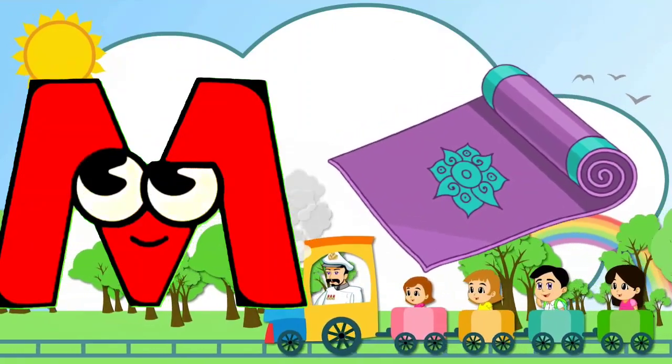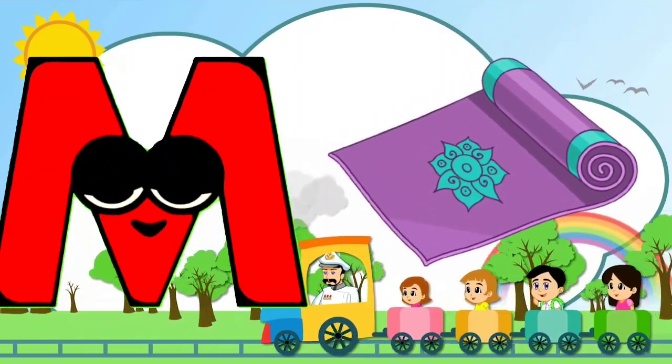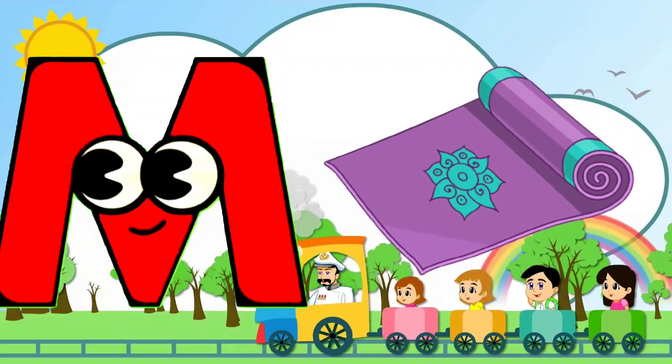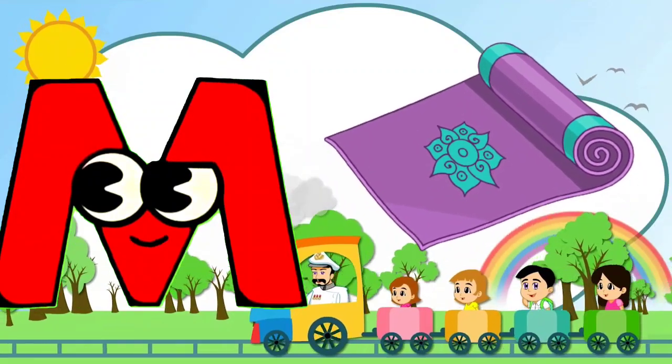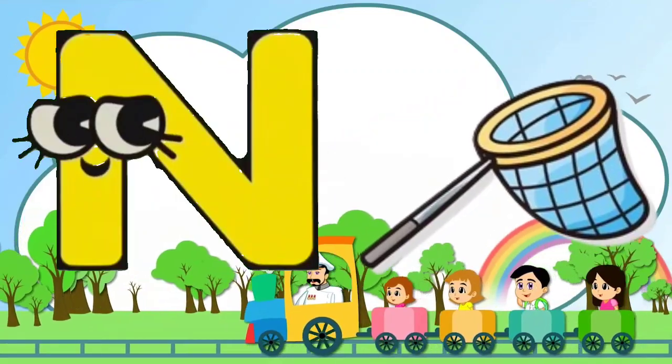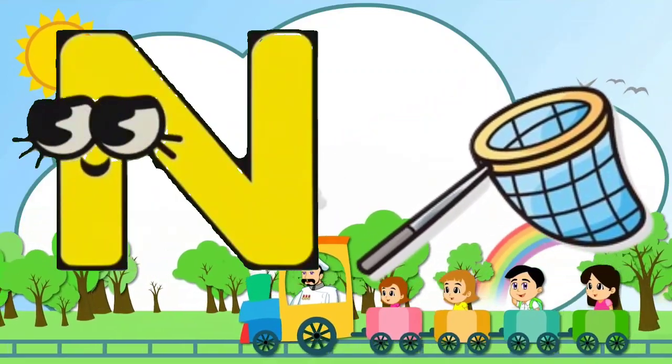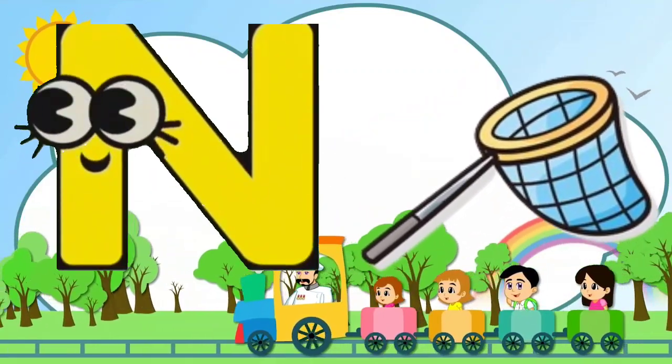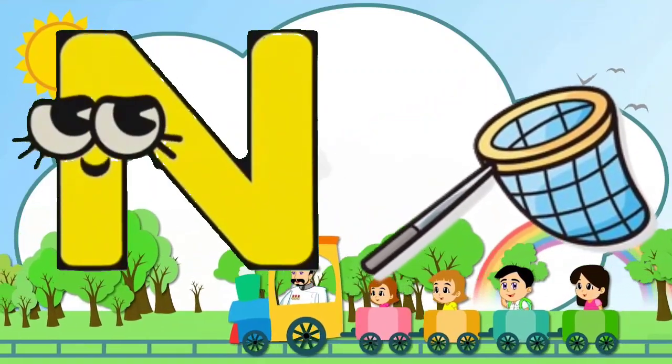M is for mat, m-m-mat. N is for net, n-n-net.